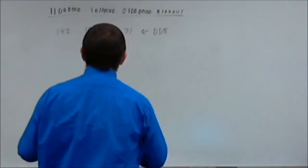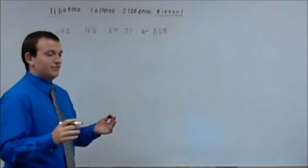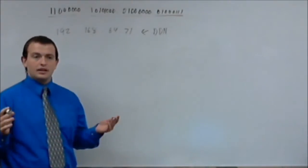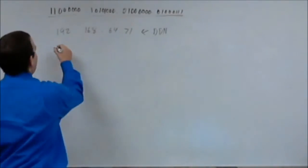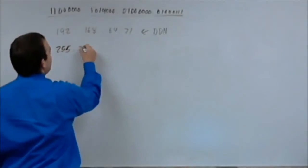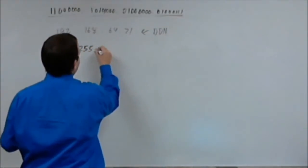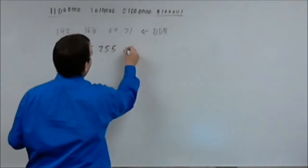Now, so let's state this is just a classful A address. Now, again, we'll get into classful addressing in a bit. But that default subnet mask is going to be 255.255.255.0.